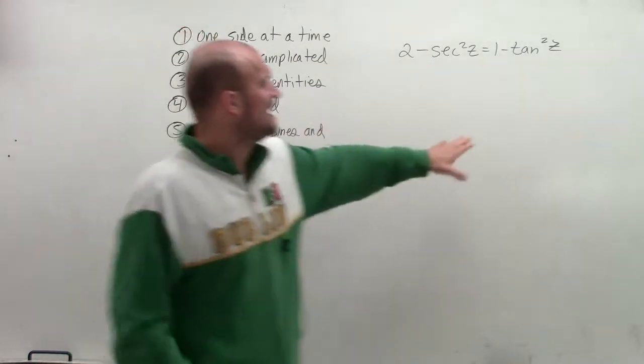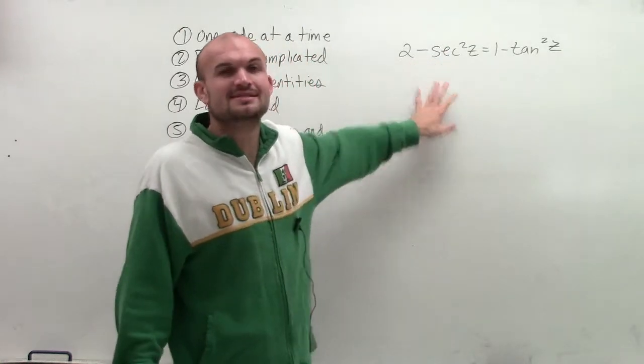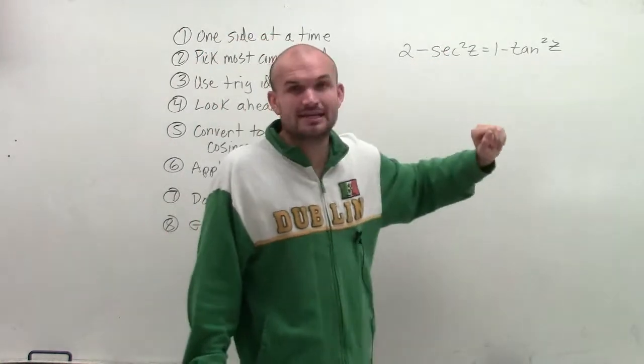But I have a 2 and a secant, and I know that this is already part of a trigonometric identity. So this one, I'm going to want to make sure I can simplify this down and see if I can get it to equal the right side.